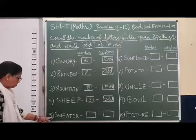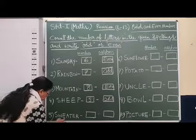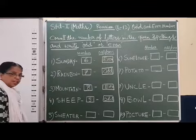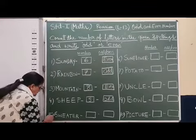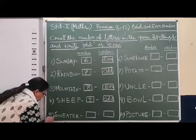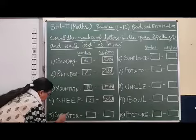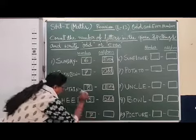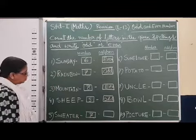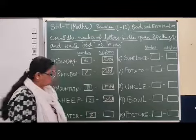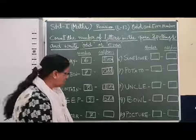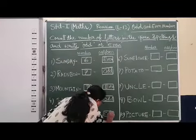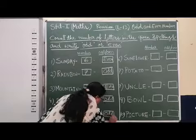Now the next one: S, W, E, A, T, E, R — Sweater. How many letters are used? One, two, three, four, five, six, seven. Numbers ending with 1, 3, 5, 7, 9 are all odd numbers. You have to remember this.